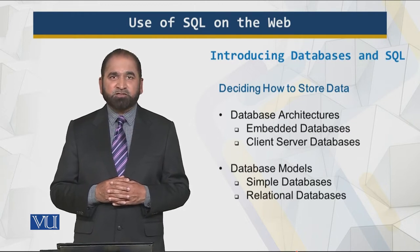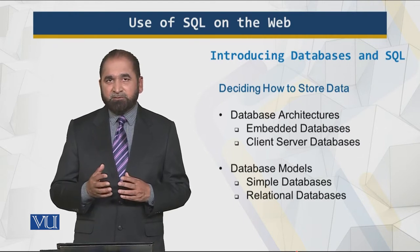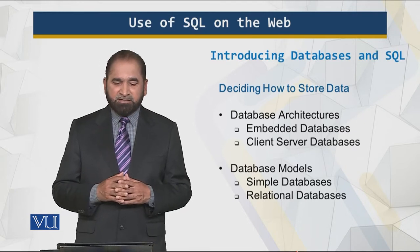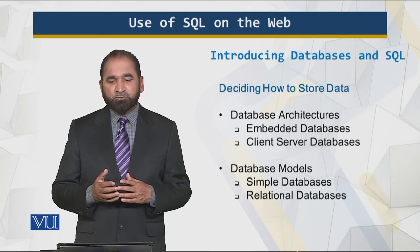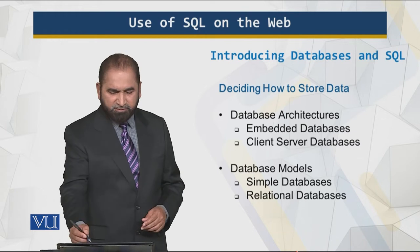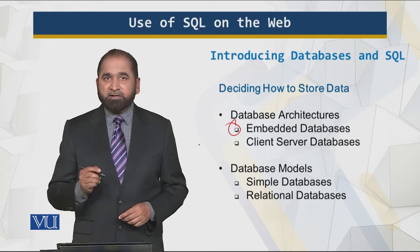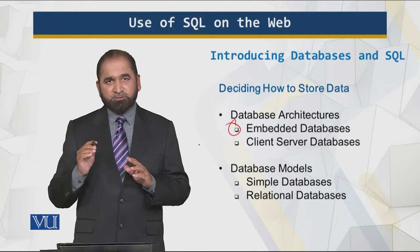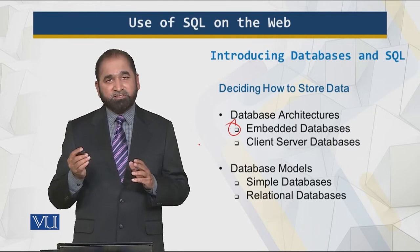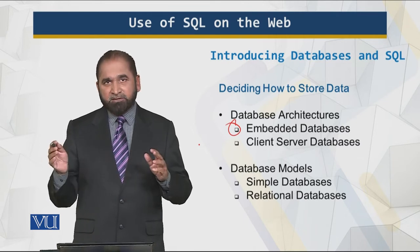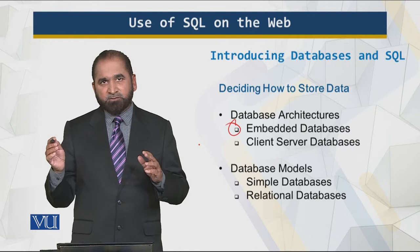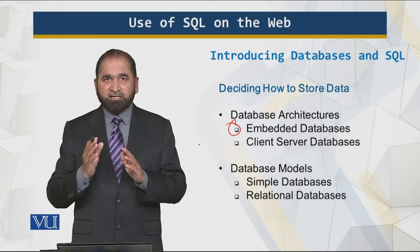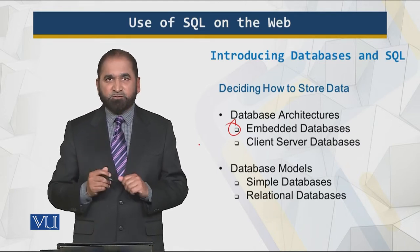Once we have decided how we'll be storing the data, there are two aspects: the database architectures and the database models. When we talk about database architectures, we look at the embedded system. In the embedded system, the database is stored along with the application on the same server. This gives very good performance because there is no connectivity or communication over any network — the application and database are both residing on the same server.